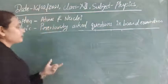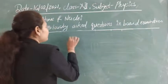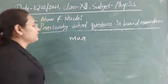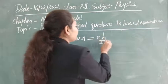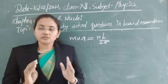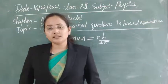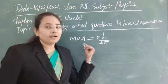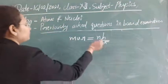For an electron of mass m moving with velocity v in a circular orbit of radius r, the angular momentum is mvr, which equals an integral multiple of h upon 2π. This condition applies to stationary orbits — Bohr's first postulate states electrons revolve only in certain circular orbits for which the angular momentum is an integral multiple of h/2π.